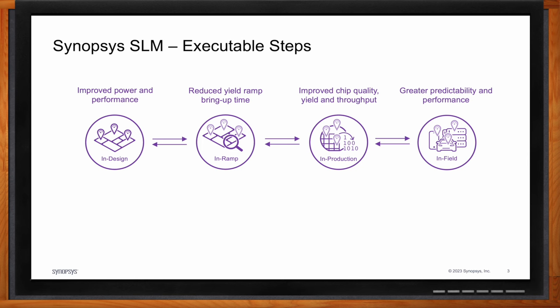The first procedural step is to add visibility into the design by way of in-silicon monitors — also called sensors. PVT, or process voltage and temperature monitors, are common ones historically used for a number of years. You need these to extract data about what's really going on inside the silicon. Newer types of monitors are also coming online, such as path margin monitors, where instead of being on the periphery, they are placed exactly on the critical paths themselves to provide precise information about the most critical areas of your silicon.